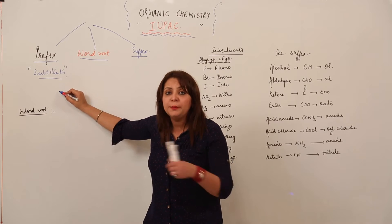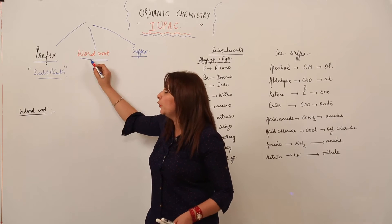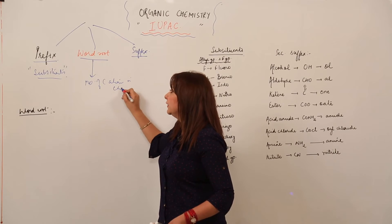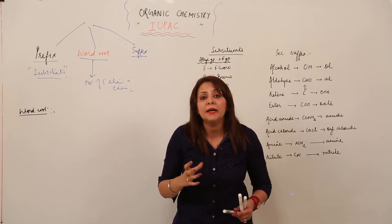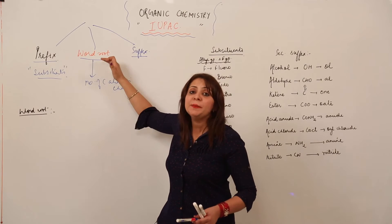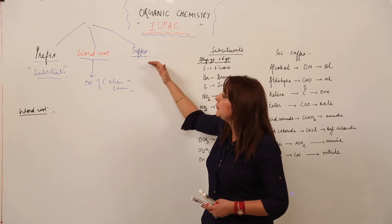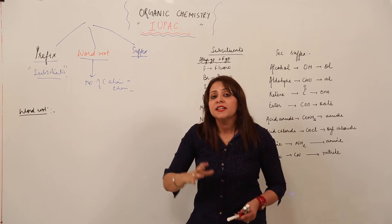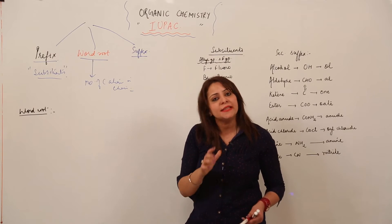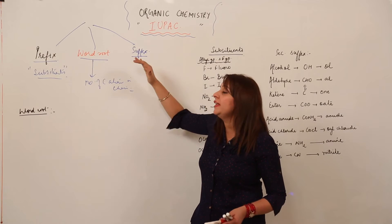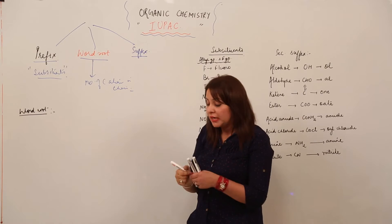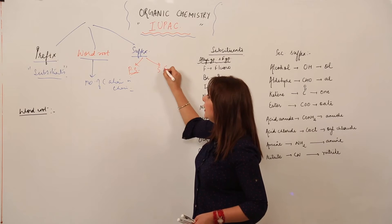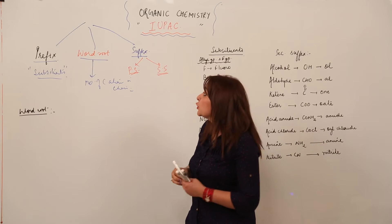The word root specifies the number of carbon atoms in the chain — that means the number of carbon atoms present in an organic compound. The third part is the suffix, which means the ending. Just as 'suffix' is commonly used in daily language to mean an ending, similarly in chemistry the end of the name is called the suffix. The suffix is divided into two categories: primary suffix and secondary suffix.